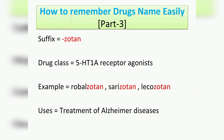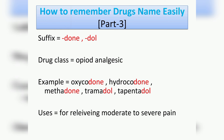The next suffix is '-gepant', which belongs to the drug class 5-hydroxytryptamine-1A (5-HT1A) receptor agonists. Examples include ubrogepant, rimegepant, and lasmiditan. Their usage is the treatment of Alzheimer's disease.